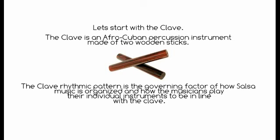Let's start with the clave. The clave is an African-Cuban percussion instrument made of two wooden sticks. The clave rhythmic pattern is the governing factor of how Salsa music is organized and how the musicians play their individual instruments to be in line with the clave.